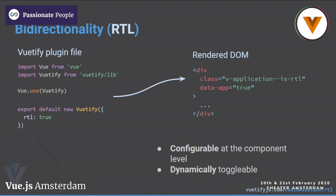Another feature, which goes into RTL, is bi-directionality. In Vuetify you can configure it at a global level on the fly, but you can also configure it at a component level. I spoke with someone who actually needed that feature because they built an application for the Quran. You can configure down to a base component level, giving you more control because not everyone's application is the same.